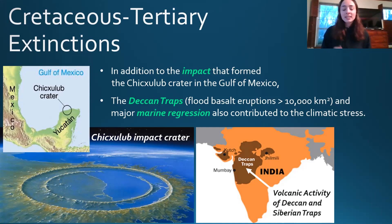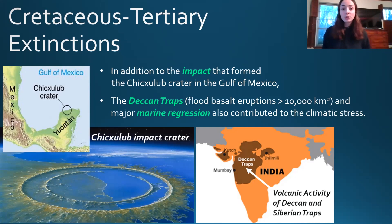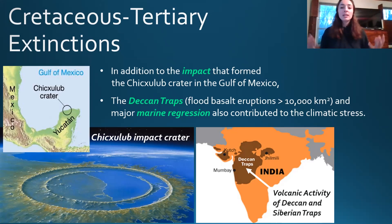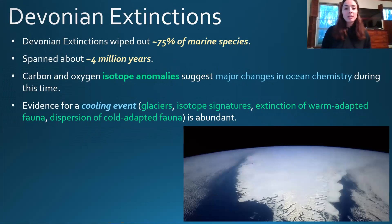The Deccan Traps, like the Siberian Traps earlier in Earth's history, caused a lot of CO2 release and sulfate release. Marine regression caused reduction of shallow marine shelf area, and the asteroid impact caused blocking of sunlight and the end of photosynthesis. All of these factors, similar to the Permo-Triassic extinction, came together to ultimately cause a major extinction event.